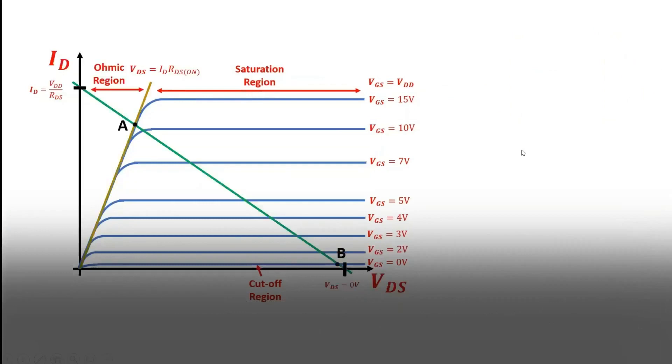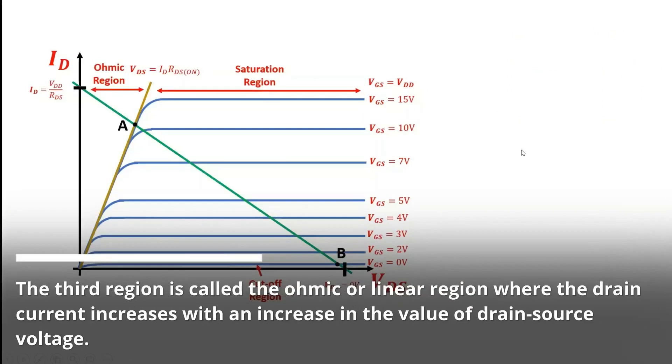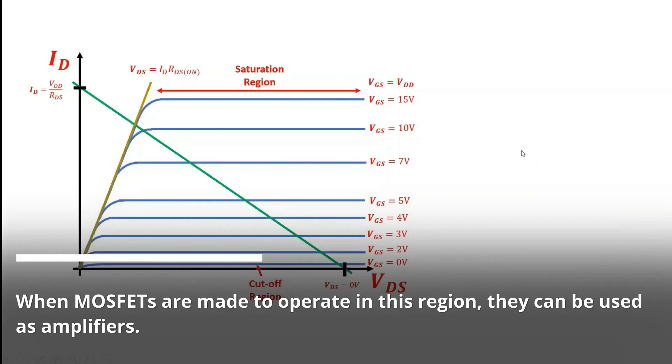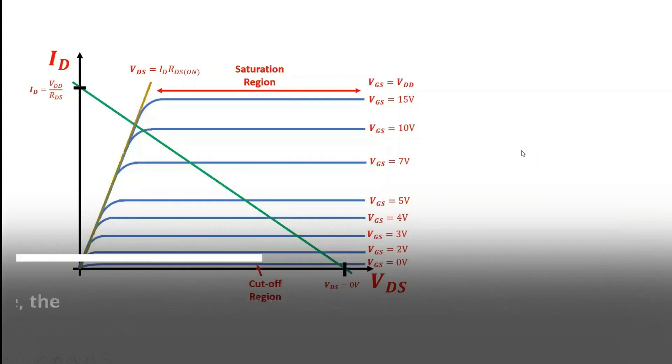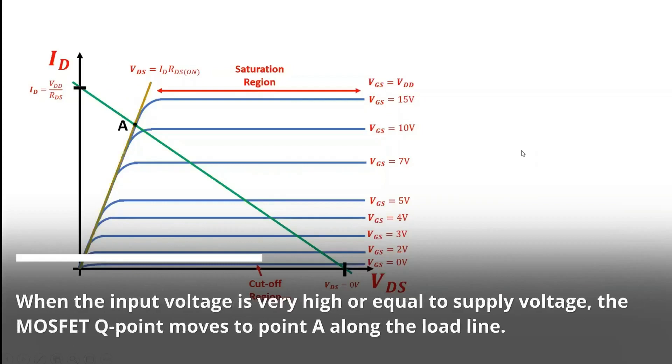The third region is called the ohmic or linear region where the drain current increases with an increase in the value of drain source voltage. When MOSFETs are made to operate in this region, they can be used as amplifiers. When the input voltage is very high or equal to supply voltage, the MOSFET Q-point moves to point A along the load line.